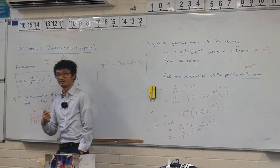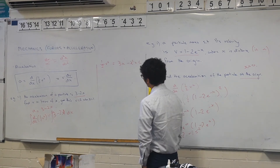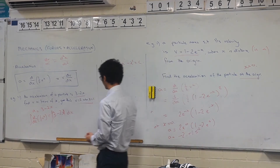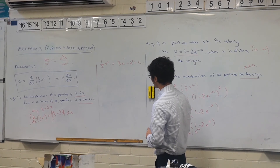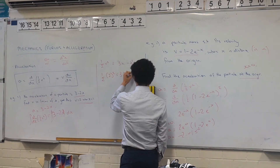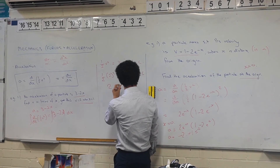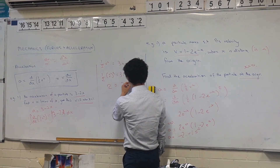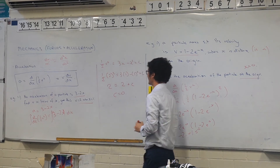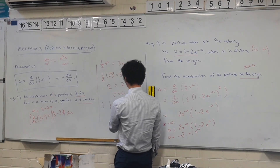We want to find v. We have initial conditions: when v is equal to 2 and x is equal to 1, we can substitute those in. So ½ times 4 equals 3 times 1 minus 1, which gives c equal to 0. So our expression is ½v² equals 3x minus x squared. Multiplying everything by 2 gives v² equals 6x minus 2x squared.